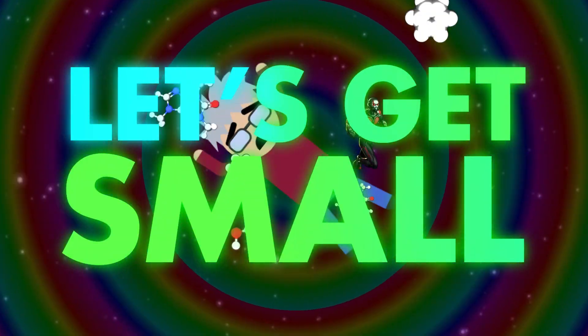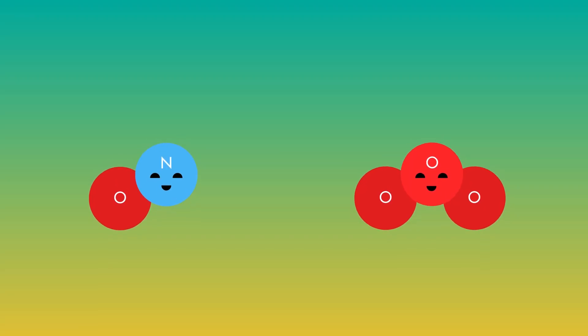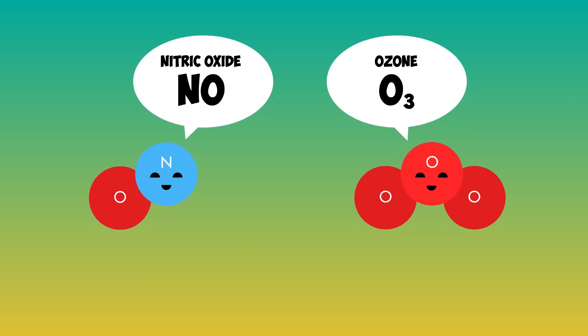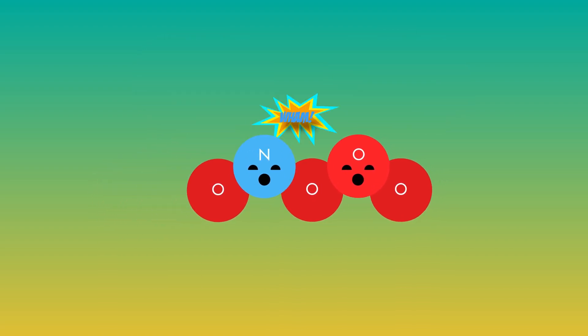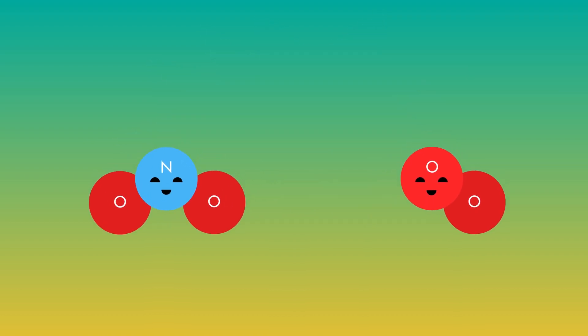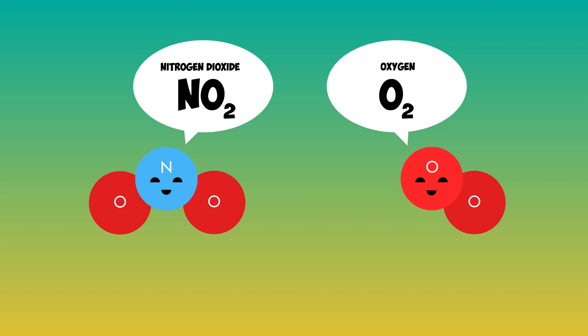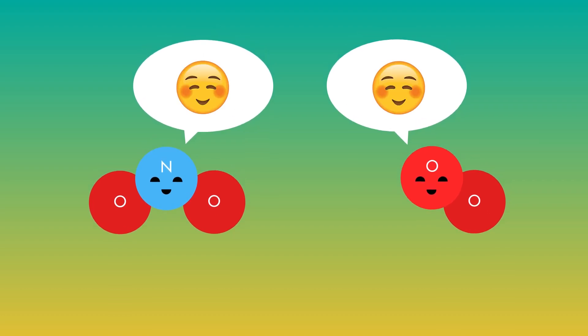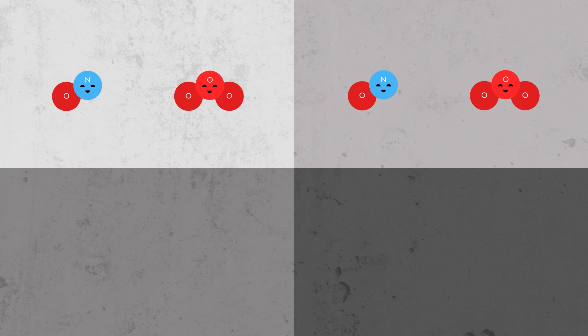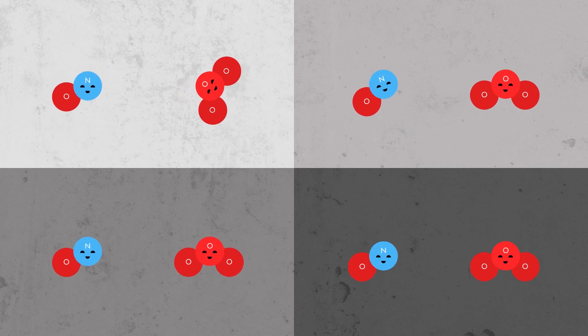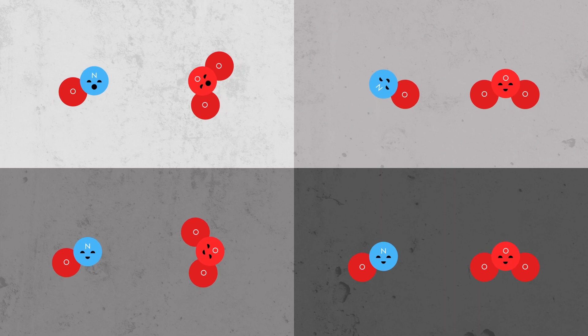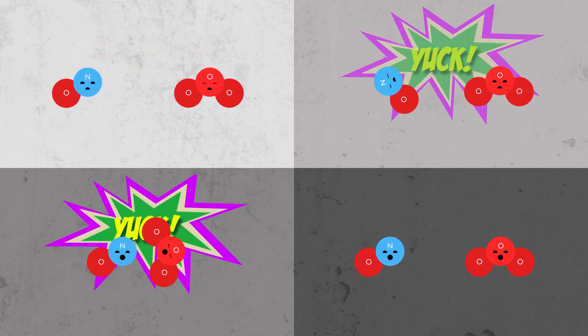What do we mean by the correct orientation for a collision? Consider the reaction of nitric oxide with ozone to produce nitrogen dioxide and dioxygen. In order for this reaction to occur, an oxygen atom must be transferred from one molecule to the other. That means an oxygen-oxygen bond in ozone must break and a new nitrogen-oxygen bond must form. In this reaction, these two things must happen at the same time, with the old bond cleavage and the new bond formation occurring simultaneously.